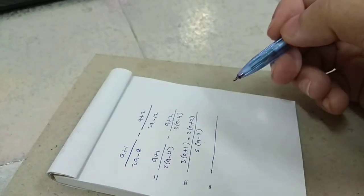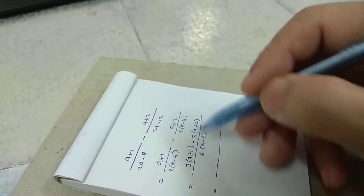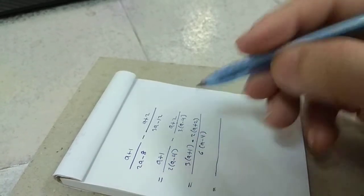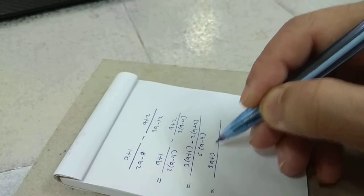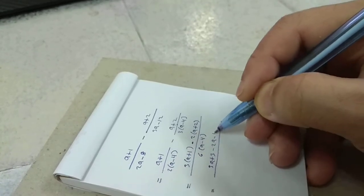What can we do? We can expand the numerator and simplify: 3a plus 3 minus 2a minus 4.